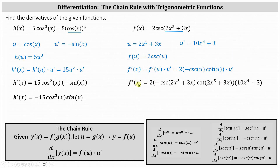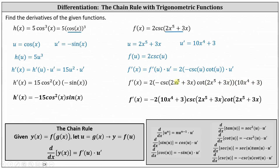This gives us f prime of x equals 2 times negative cosecant of the quantity 2x to the 5th plus 3x times cotangent of the quantity 2x to the 5th plus 3x. Simplifying, f prime of x equals negative 2 times the quantity 10x to the 4th plus 3 times cosecant of the quantity 2x to the 5th plus 3x times cotangent of the quantity 2x to the 5th plus 3x.